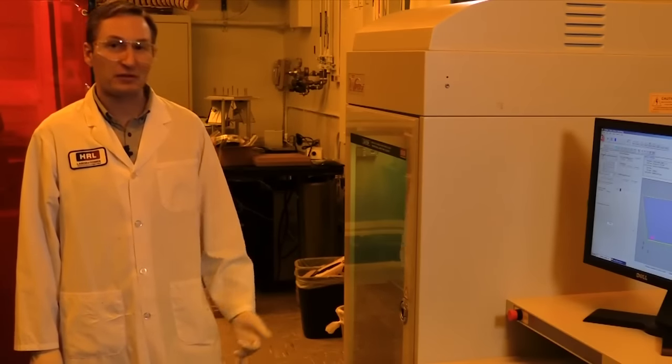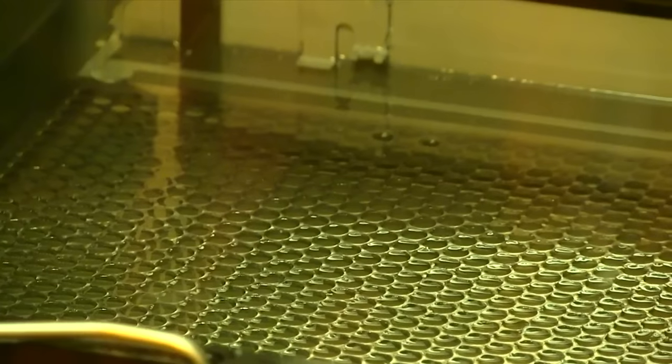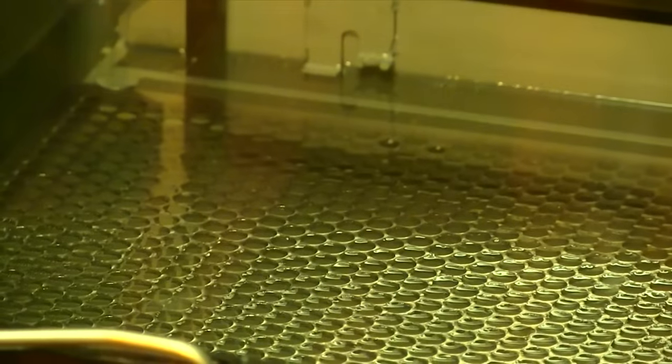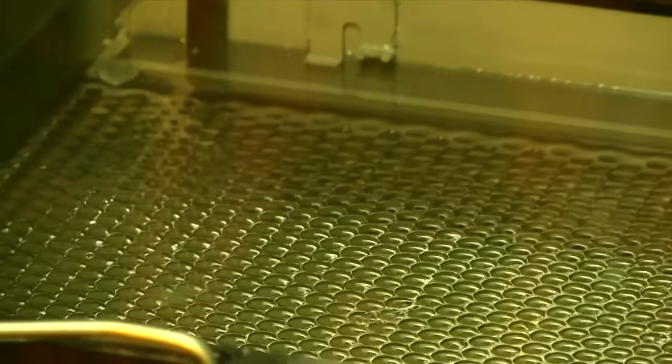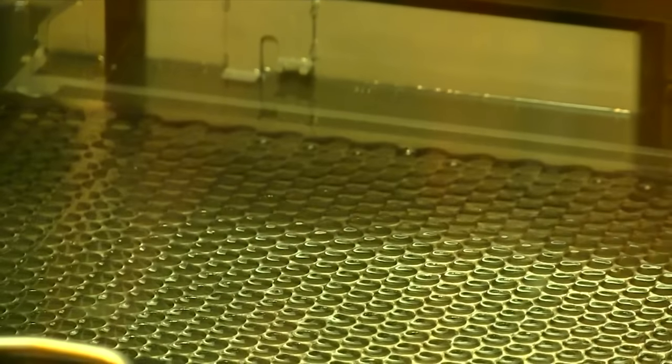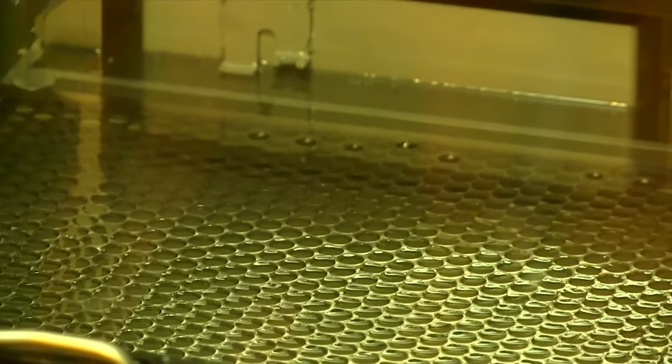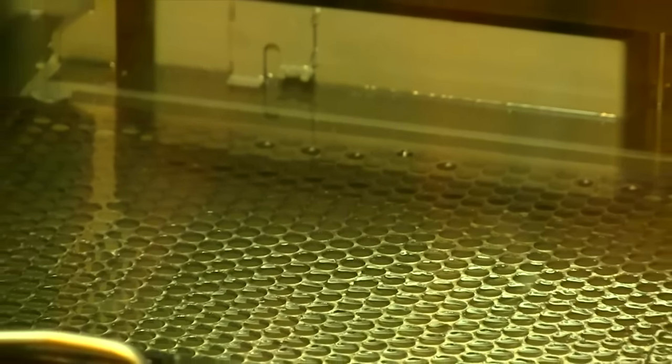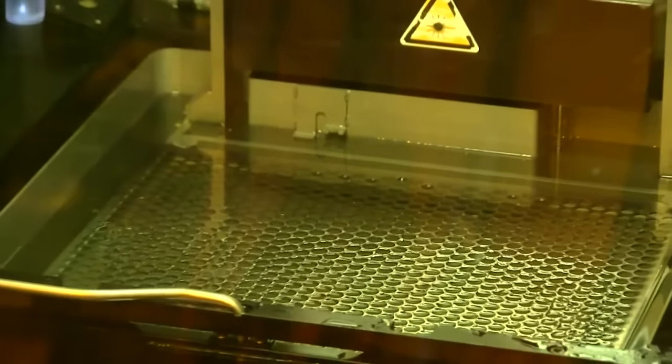This is a stereolithography 3D printer that we filled with our newly developed pre-ceramic resin. We're printing a part by rastering the laser over the part geometry. Wherever the laser hits the resin, it cures into a polymer. The unique thing about this pre-ceramic polymer is that we can fire it to convert it into a ceramic.